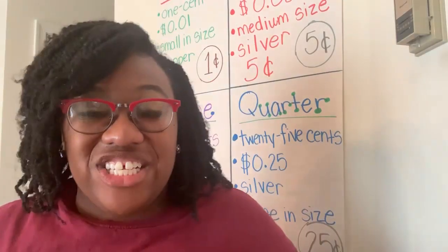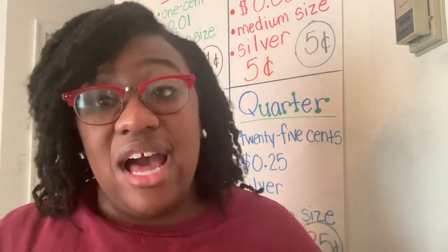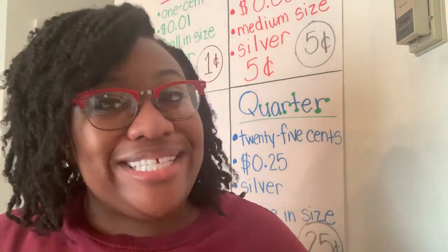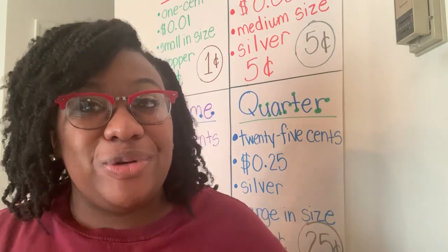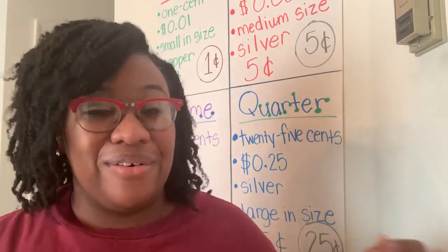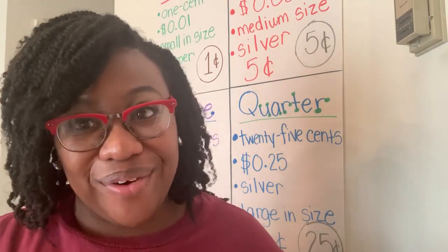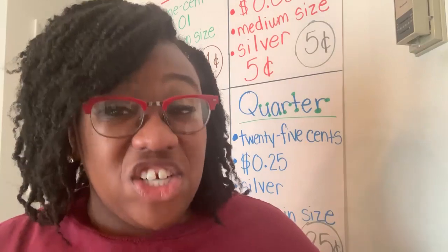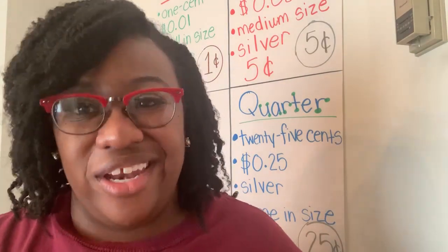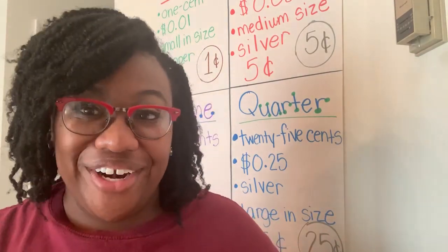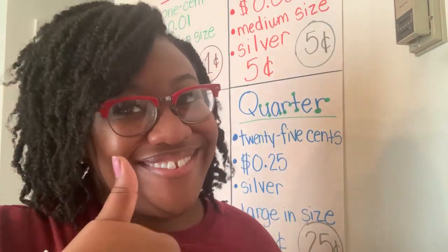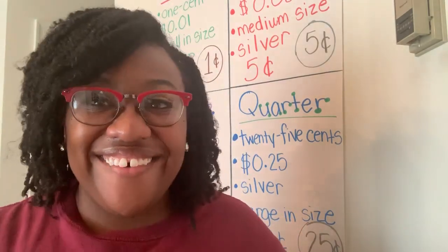All right guys, our lesson today comes from SLLK.7. SLLK.7 states that students should be able to identify the attributes of a penny, nickel, dime, or quarter. They should also be able to count how many pennies it takes to equal a nickel, dime, or quarter. Are you ready to get started?